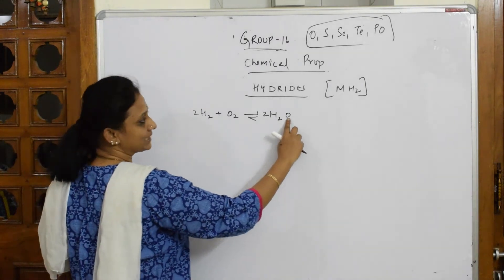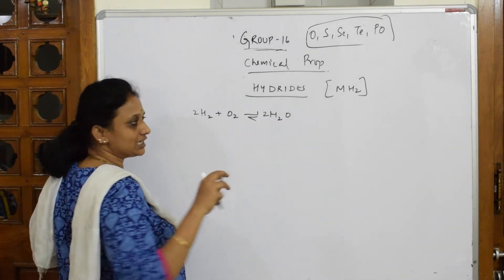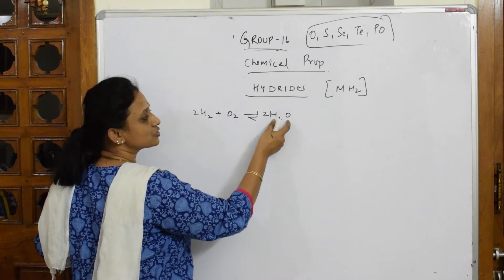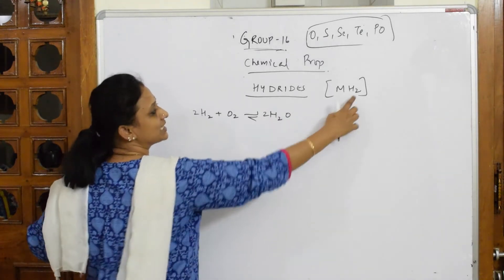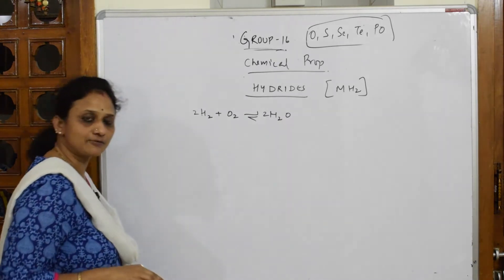This is your metal. It means the metal means the particular element. Metal and the hydrogen. So, the formula is M and H2. So, MH2 is a general formula.